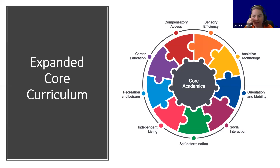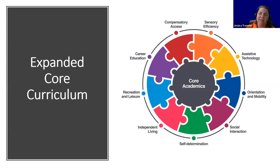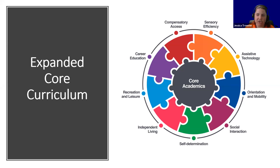There's a graphic from Perkins School for the Blind explaining the expanded core curriculum. In the center is a gray puzzle piece labeled 'core academics,' because the expanded core curriculum is designed to enhance those core academics — reading, writing, math, science, social studies. Around it in a circle are colored puzzle pieces, each with a different aspect of the expanded core curriculum.